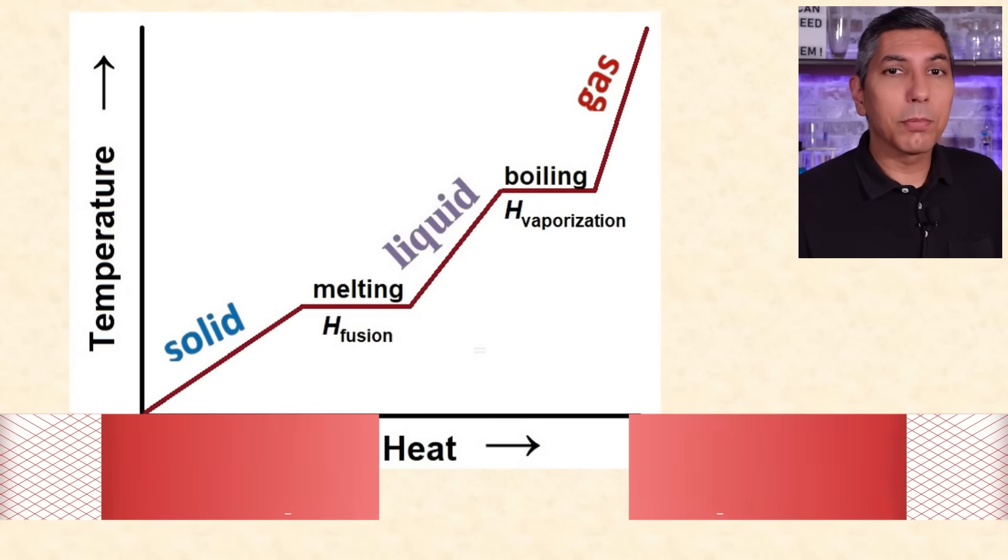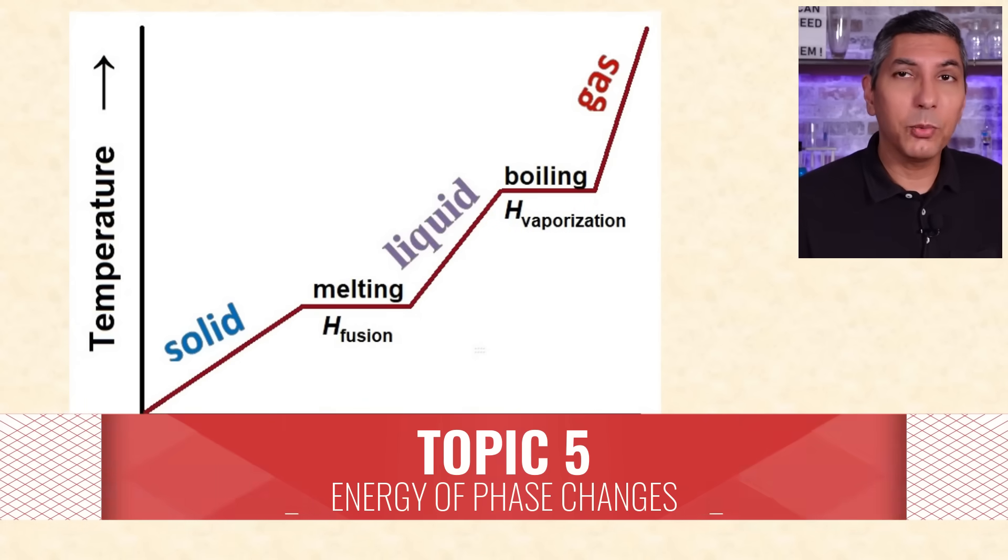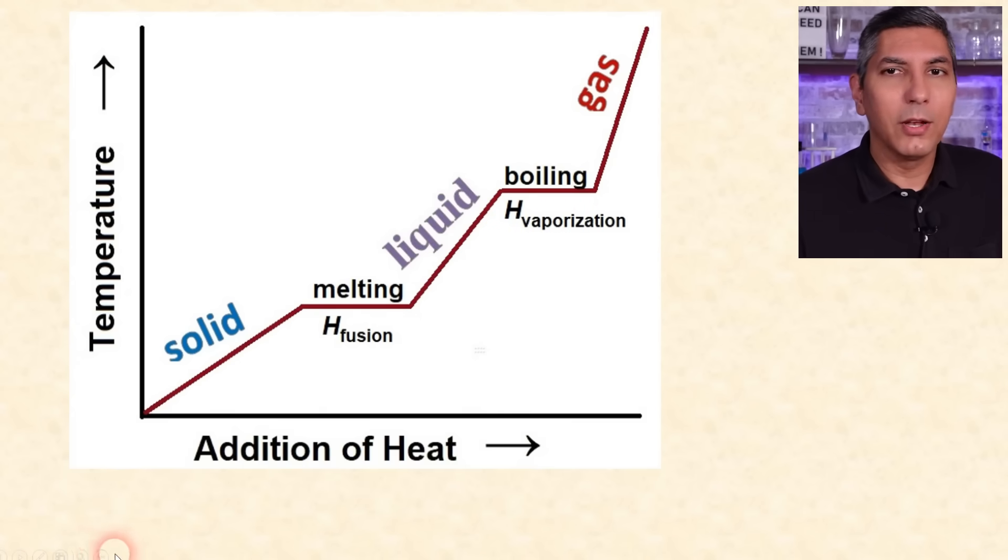This heating curve represents how temperature changes as we add heat to a substance. Notice how the temperature stays constant during the process of melting, how it also stays constant as it boils. When we add heat to a solid or a liquid or a gas, its temperature goes up. But during any phase change, the temperature stays constant.